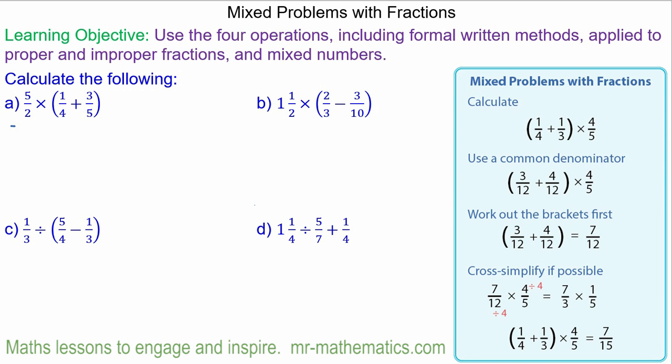Now the first thing we're going to do is write these fractions with a common denominator. So one quarter will be five twentieths and three fifths will be twelve twentieths.